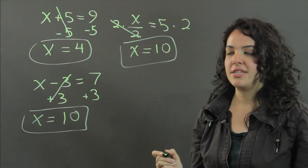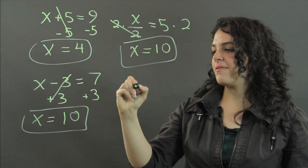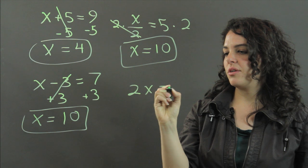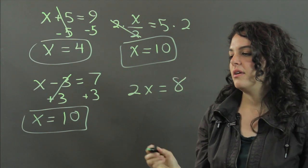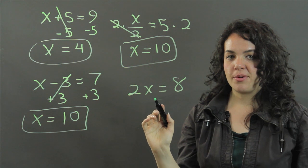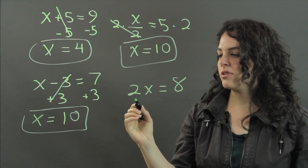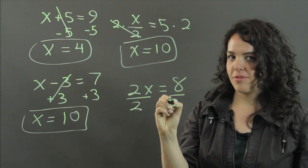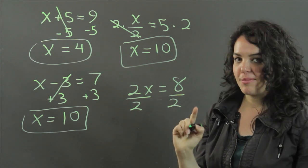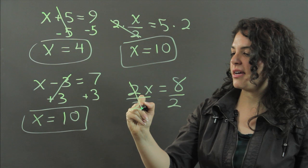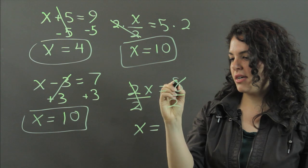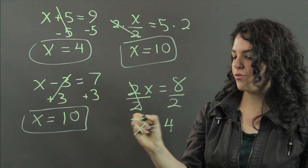And then the last one, if I have 2 times x equals 8, the inverse operation of multiplication is division. So I'm going to divide by 2 from both sides. Remember that. 2 over 2 cancels out. I get x equals 8 divided by 2 is 4.